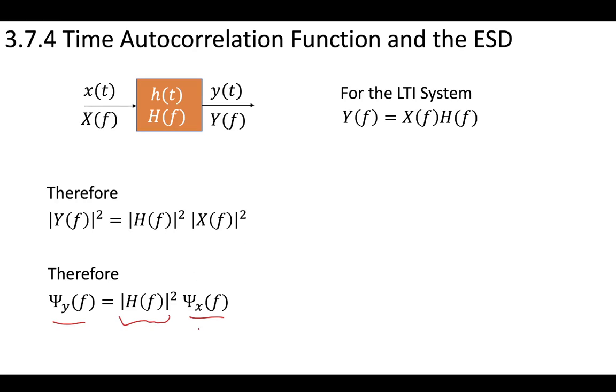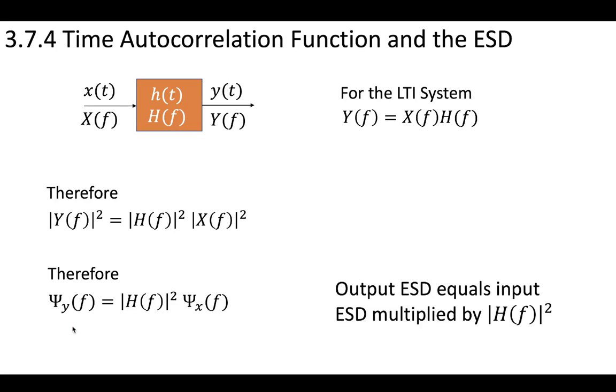So the transfer function, whatever this is, is a coefficient that multiplies the input and gives you the energy spectral density at the output. So the energy spectral density equals the input energy spectral density multiplied by this factor |H(f)|². And this is an important feature of time domain signals.